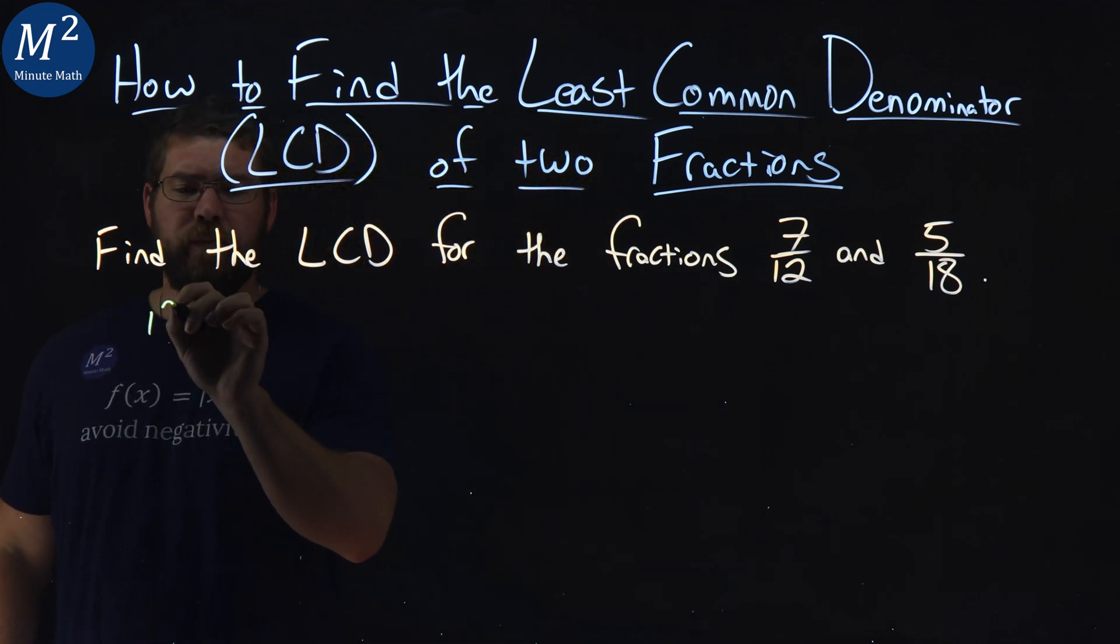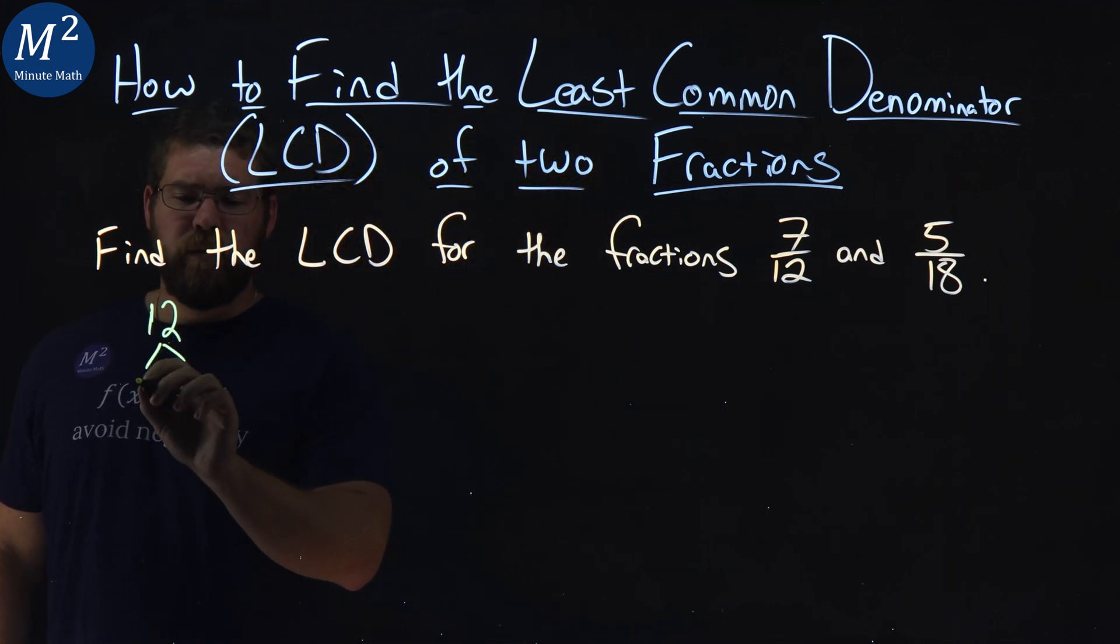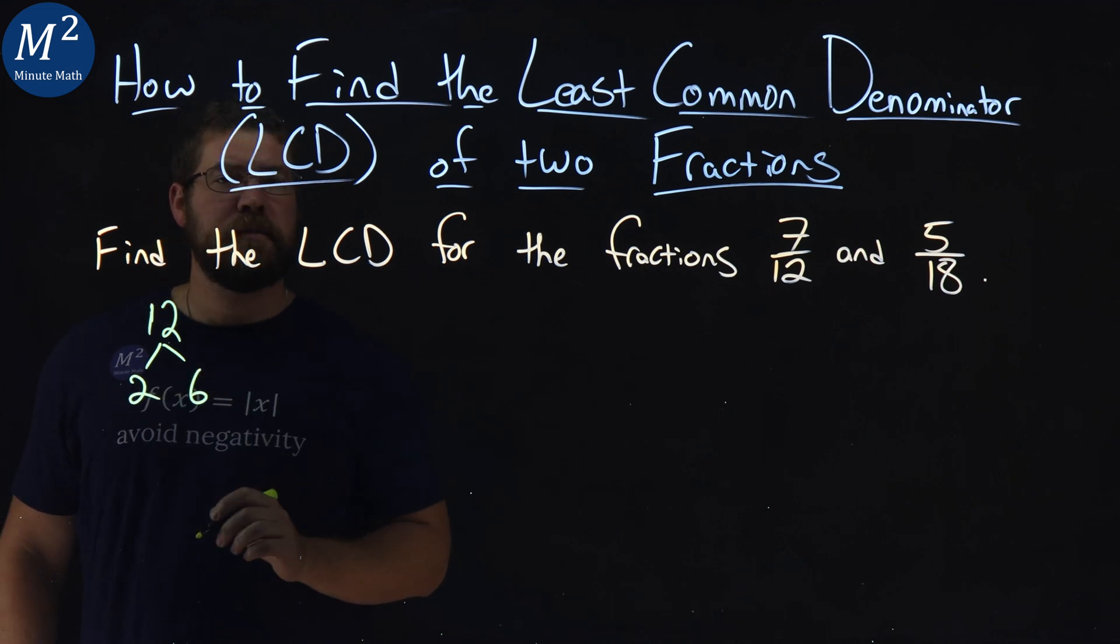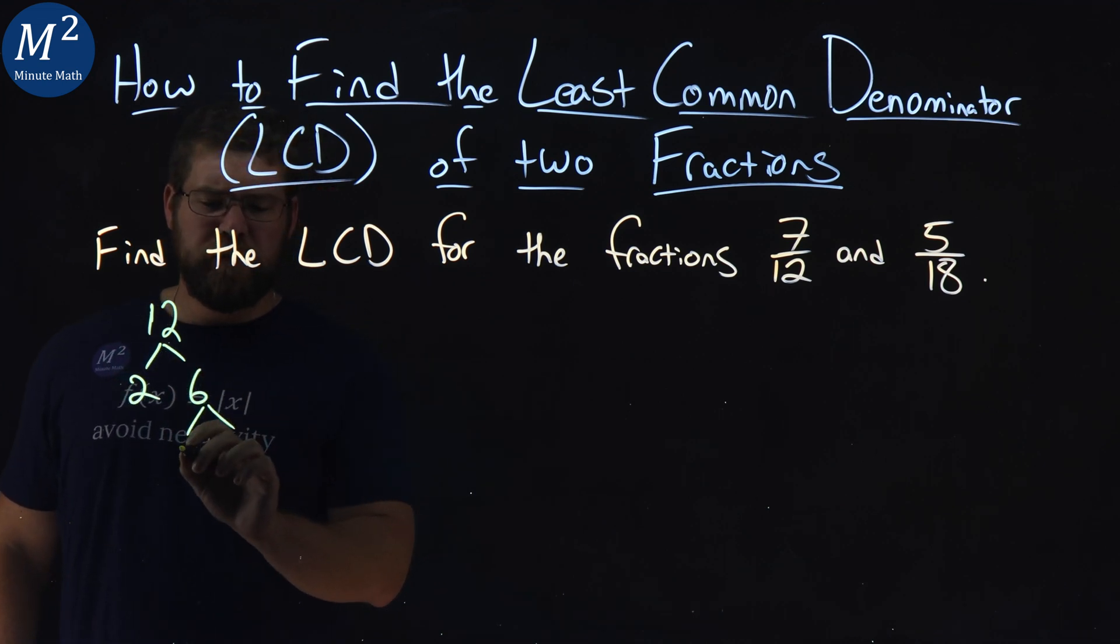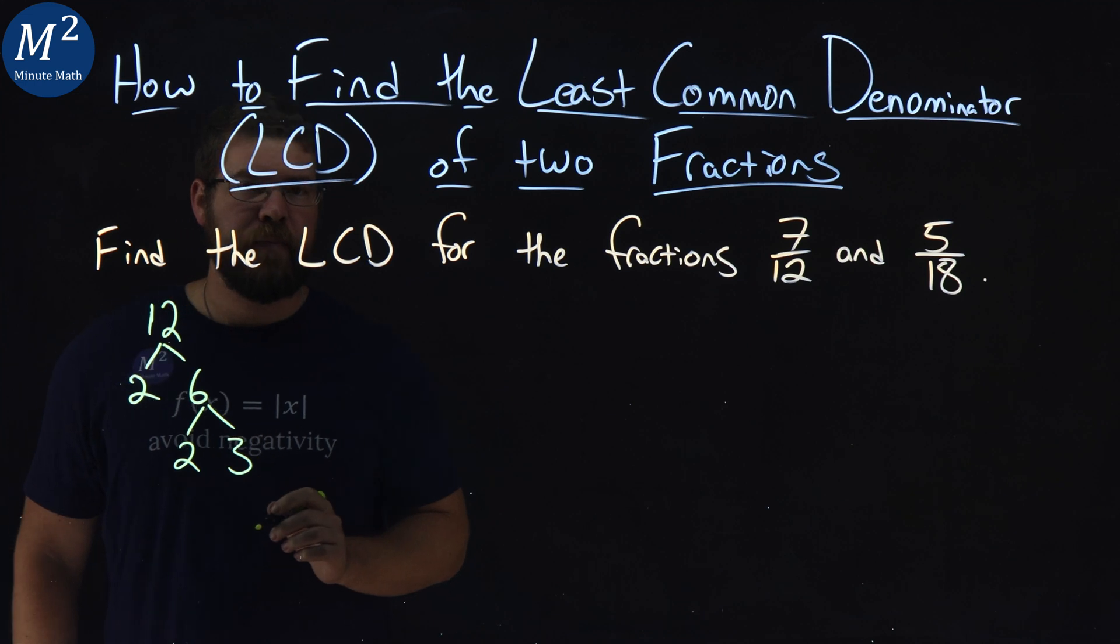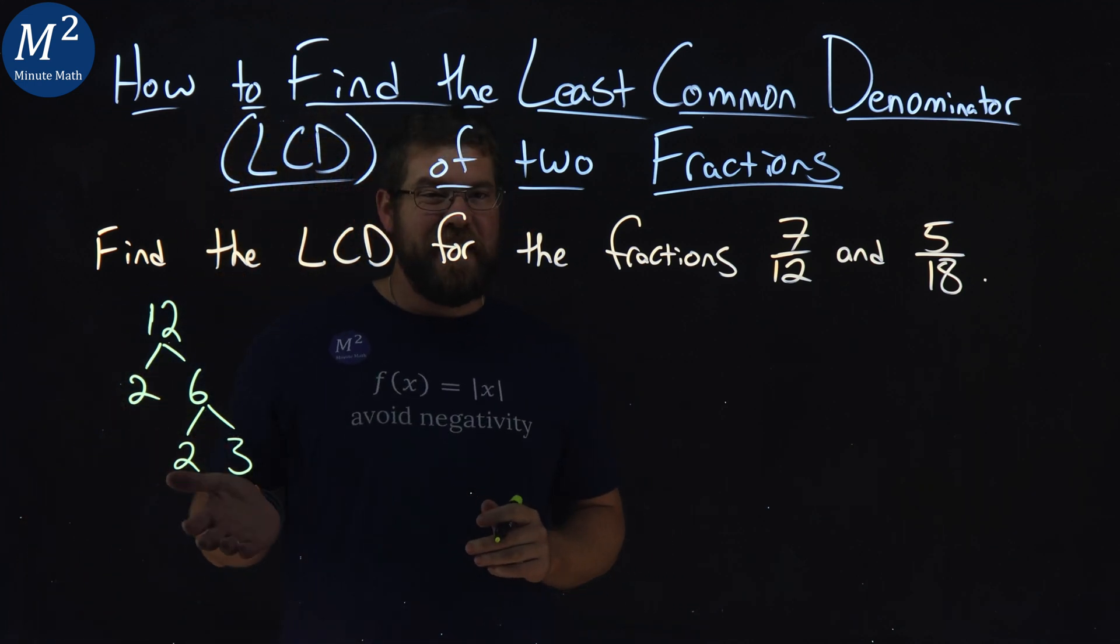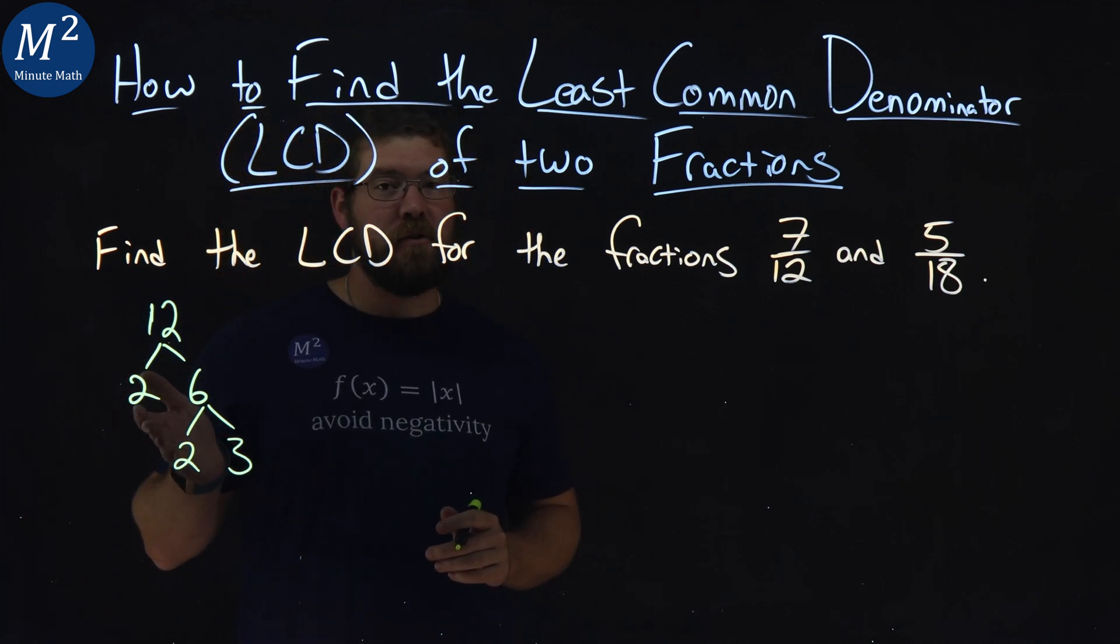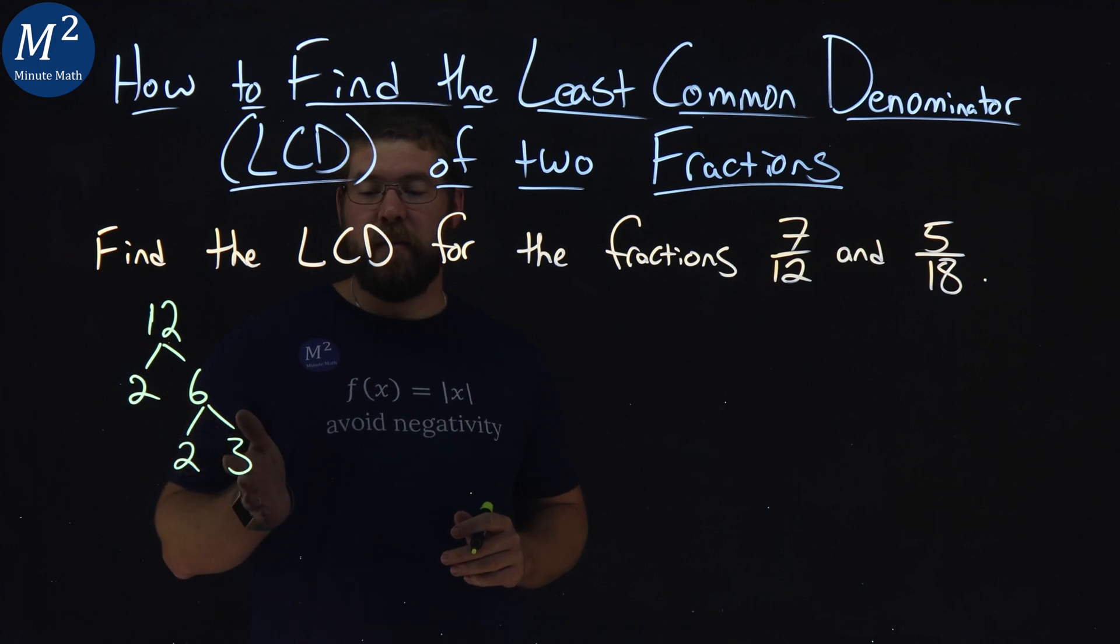Let's start with 12. 12 is 2 times 6. Then from there, 6 is 2 times 3. Can't really break this down anymore, and so we have our factor tree for 12 is 2 times 2 times 3.